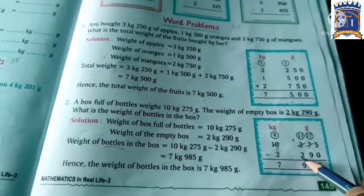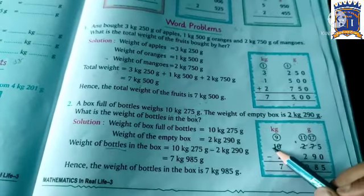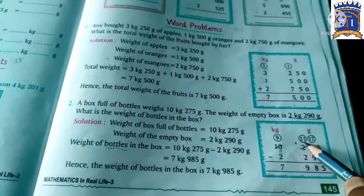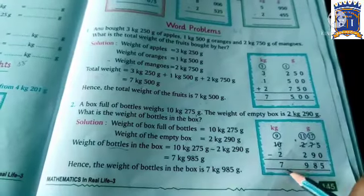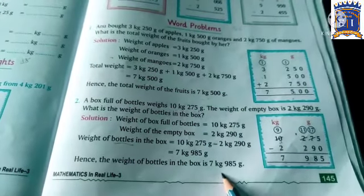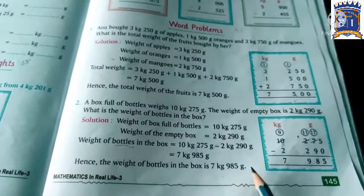Now 1. When we had 1, 1 is smaller than 2. So what will we do? We will borrow from 10. 10 has become 9 and here it's 11. So 11 minus 2 is 9. 9 minus 2 is 7. 7 kg 985 gram.